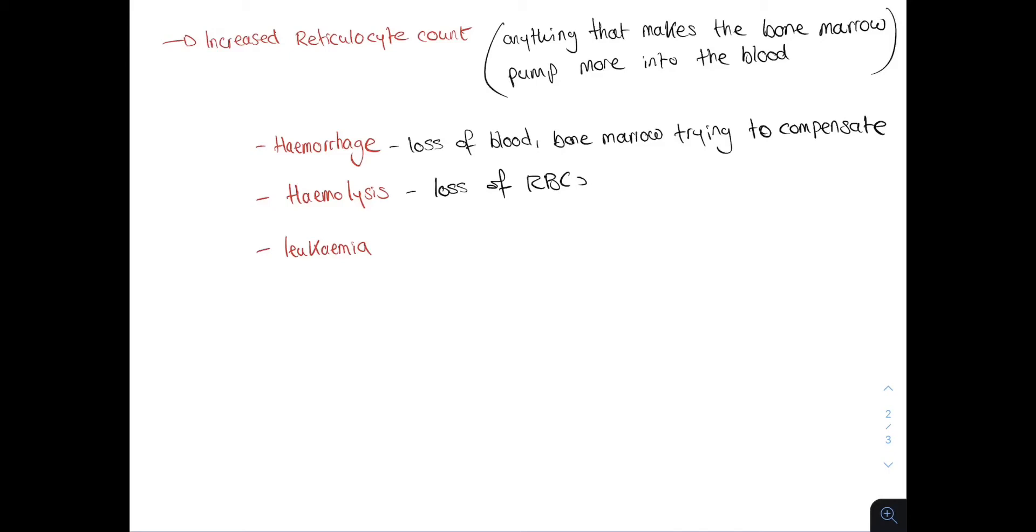Leukemia, which is a blood cancer, has increased numbers of premature cells. We shall discuss leukemias in the hematological malignancy series. Pregnancy also results in an increased reticulocyte count because more red blood cells are needed.